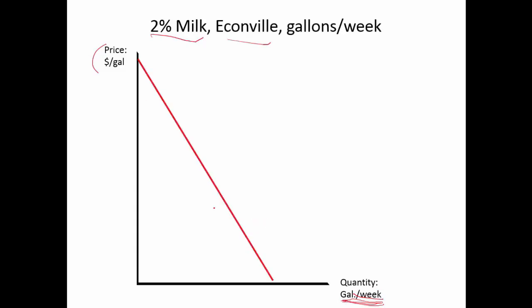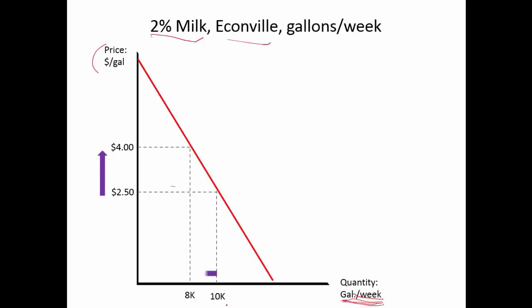We'll just draw in a generic downward sloping demand curve. It's not important at this stage to have this exactly right, because we're just using the concept of demand and supply to think about, in general, price movements. I'll give us a situation where price rises from $2.50 to $4.00, and quantity declines from 10 to 8,000 gallons. That's the law of demand at work.